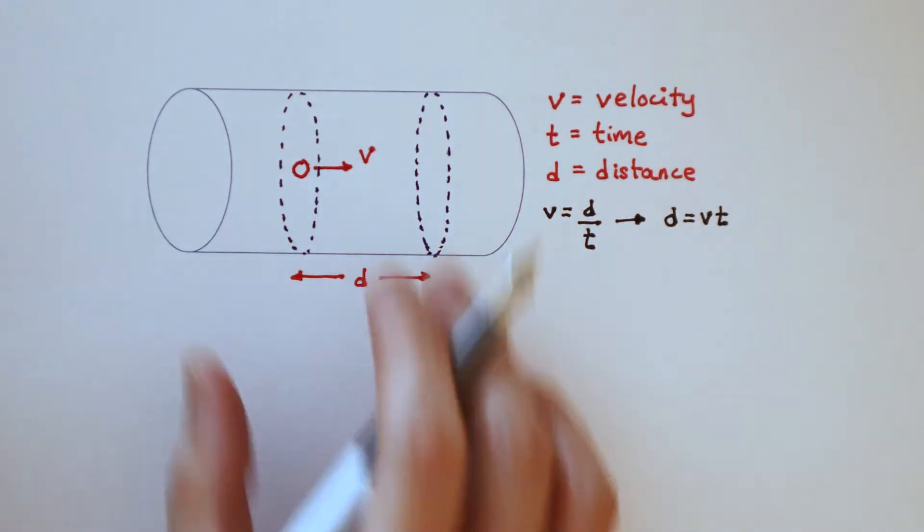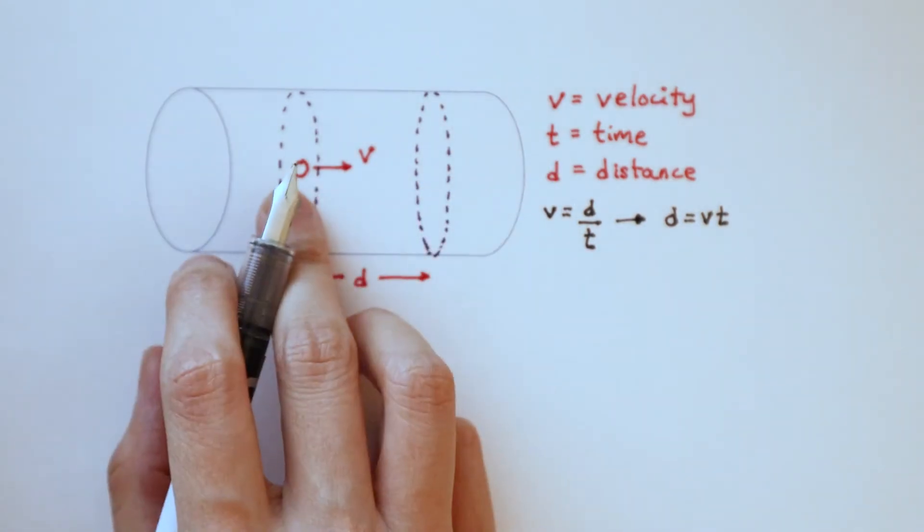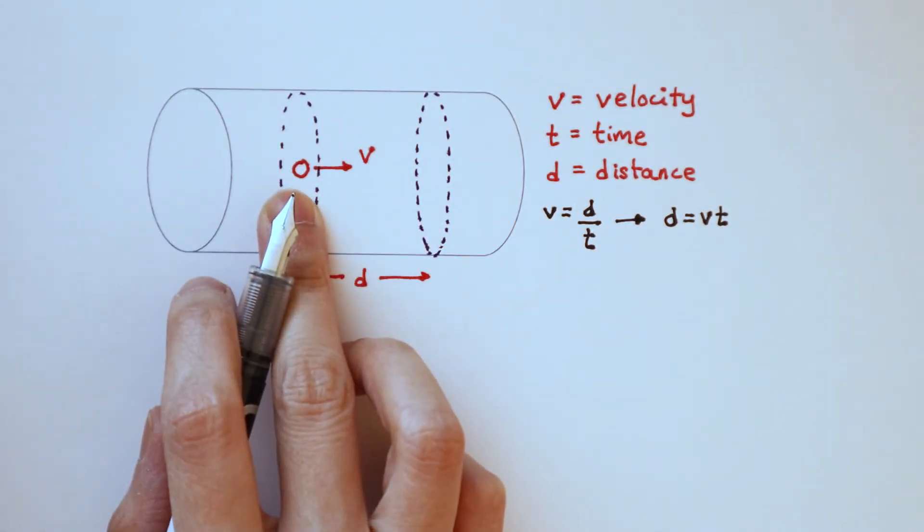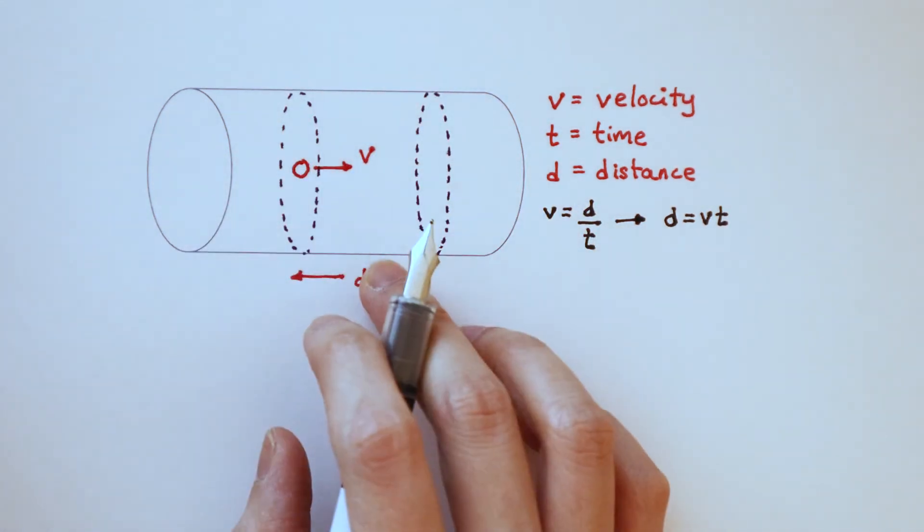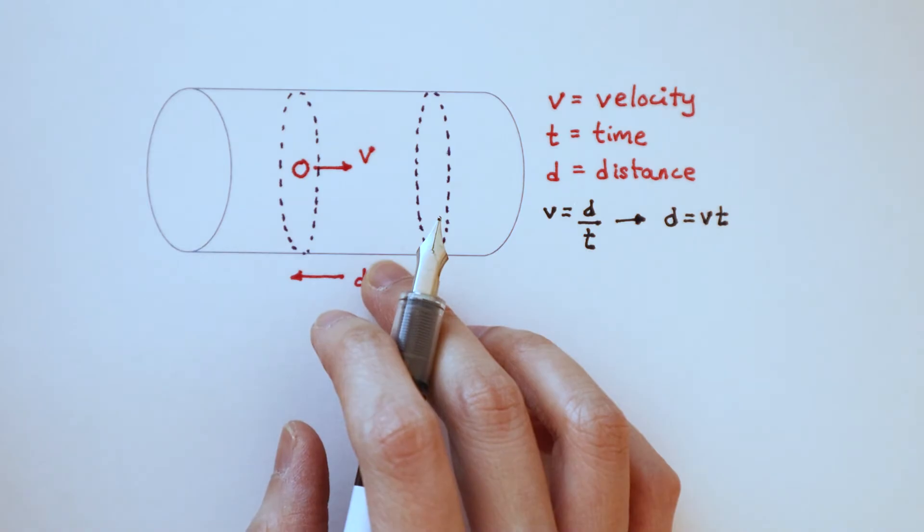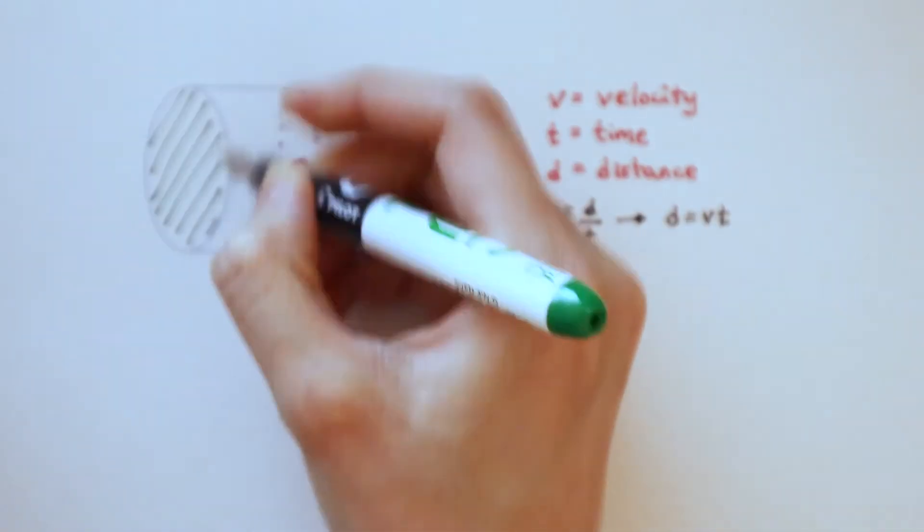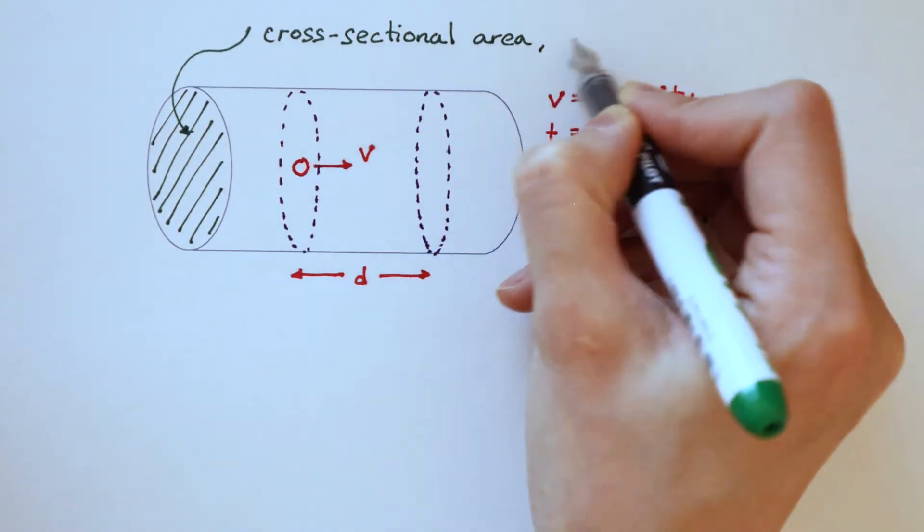In this section of the conductor, there is more than one electron. So we have to consider this as a three-dimensional problem by considering the whole volume. The volume of the cylindrical section is the cross-sectional area A multiplied by the distance d.